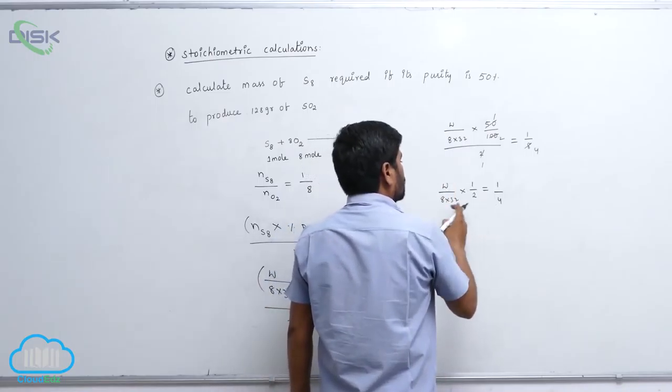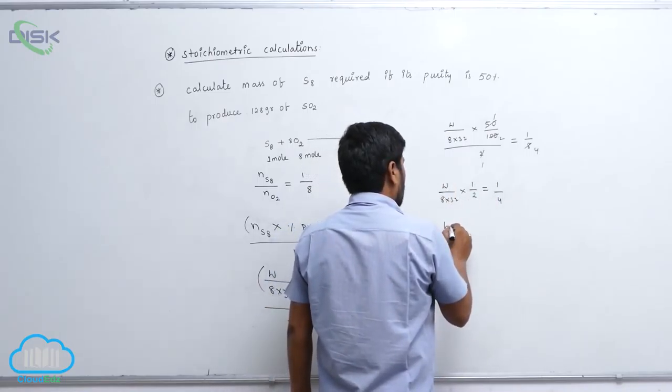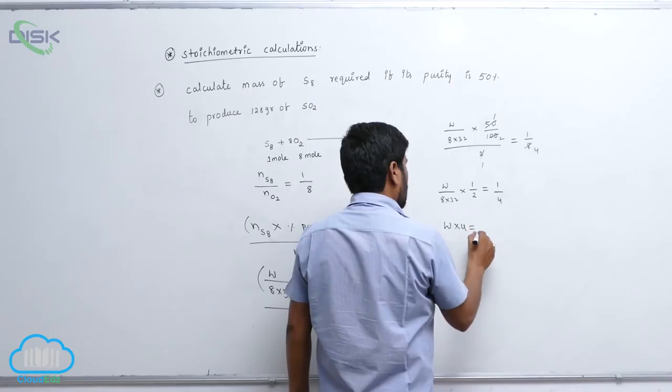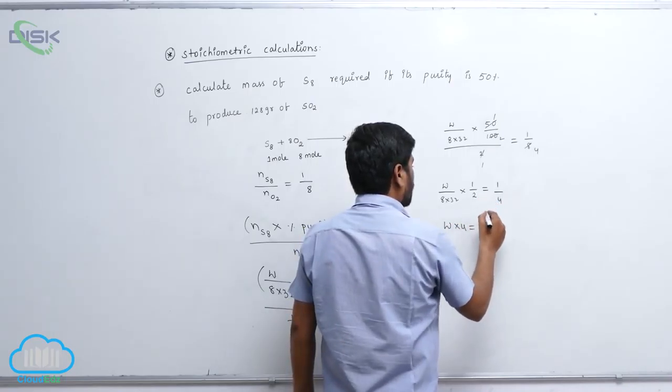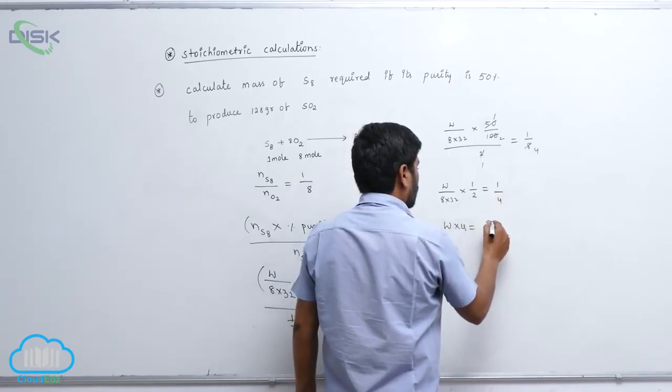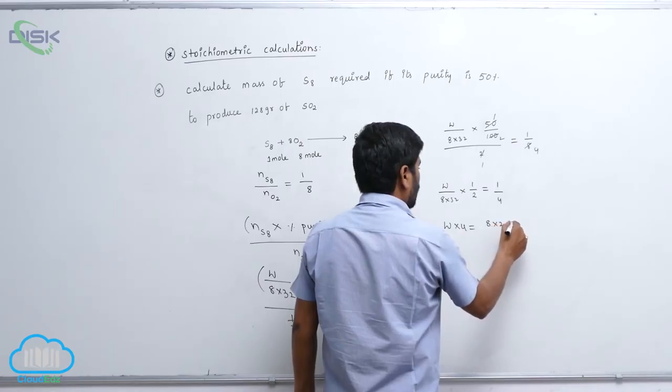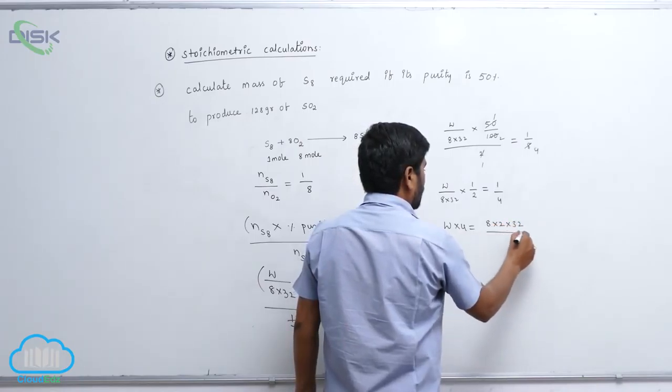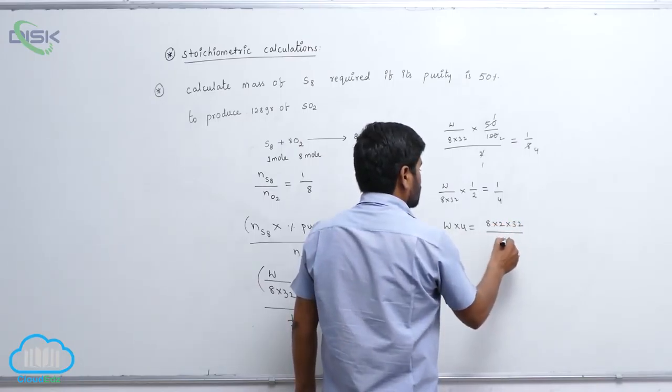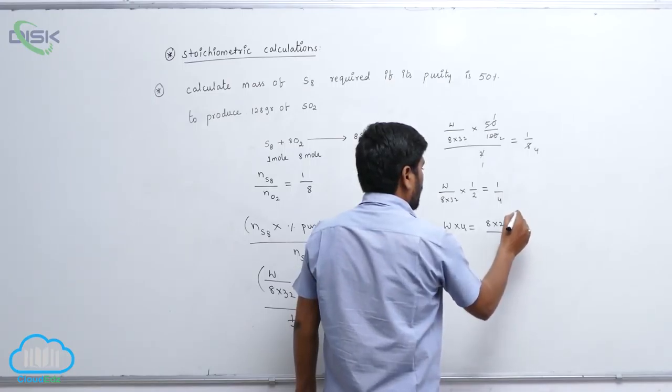1 by 4, so therefore W into 4 equals to 8 into 2 into 32 by 4. This is 4 ones, 4 eights.